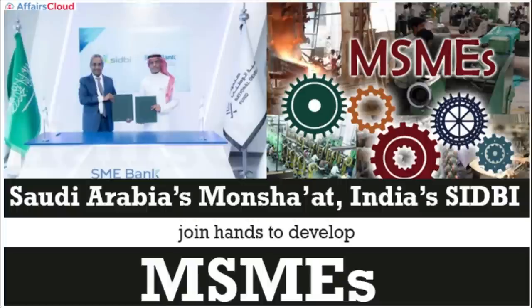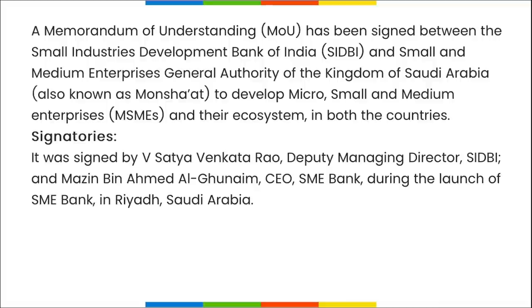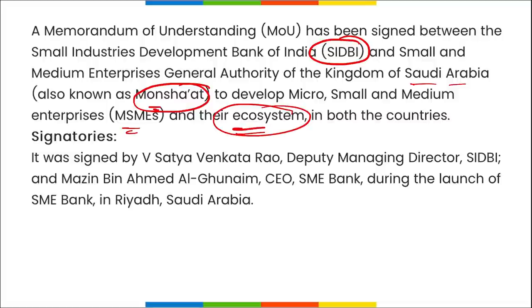Saudi Arabia's MOSHAT and India's SIDBI have joined hands to develop the MSME sector. A Memorandum of Understanding was signed between SIDBI and MOSHAT — the Small and Medium Enterprise General Authority of the Kingdom of Saudi Arabia. This is a bilateral initiative to improve diplomatic relationships between India and Saudi Arabia. Both sides will explore and collaborate on matters of common interest between their MSME institutions.